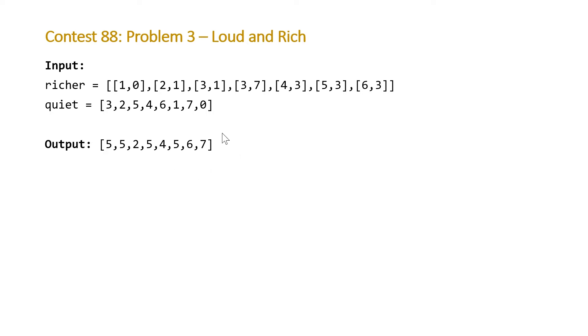This is the vector for each of the individuals. So for individual zero, the loudest person that has at least or more money than individual zero is going to be person five. The same thing for person one, and so on. The way to understand this is to look at a visual representation of a graph that can be constructed from our vector of vectors richer here.